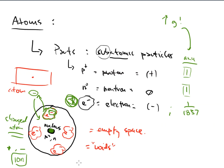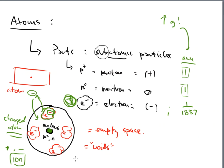Down here in the bottom left-hand corner, we talked about where these charges are located within the atom. We said the nucleus, which is the core, holds the protons and the neutrons. And these electrons were kind of like kids running around in a football field — they can just be wherever. They do take up the empty space you would find in an atom, and they have tons of space to run around in.